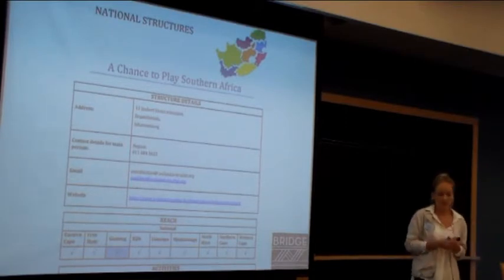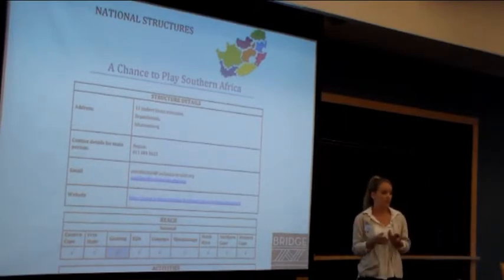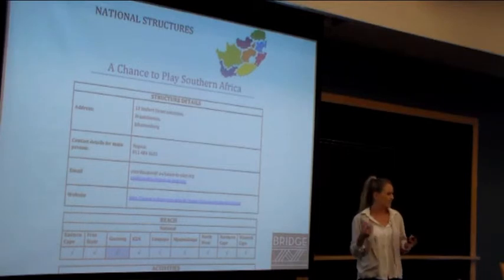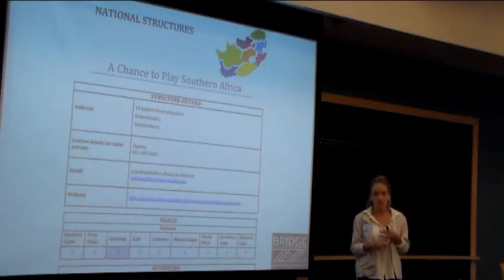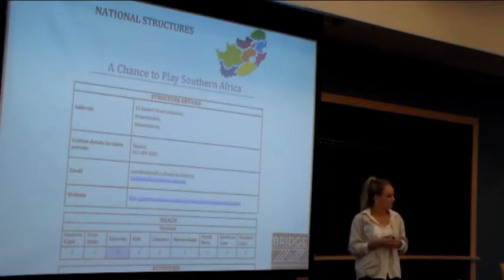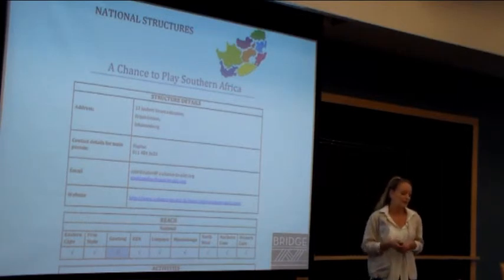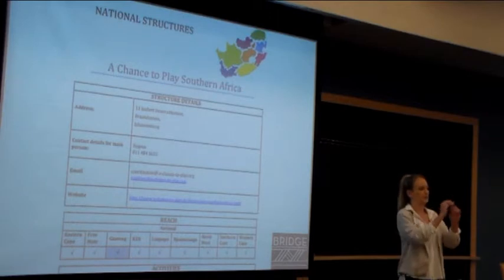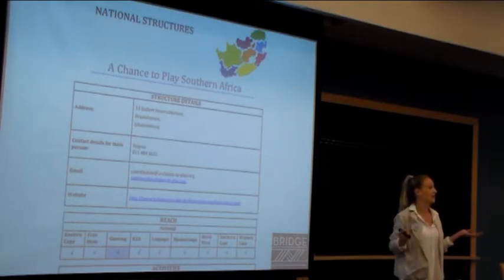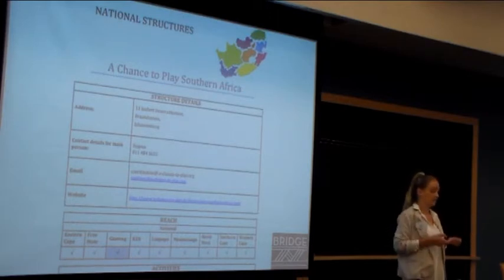Per structure, we've got information generally about contact details, address, information on where to find the website, the reach, the purpose of the organisation, and all the activities related to that structure. We've organised this in a nice document with a context page that anyone can have access to.